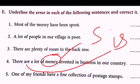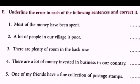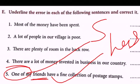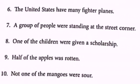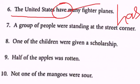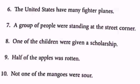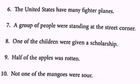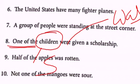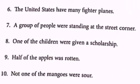'One of my friends have a fine collection of postage stamps.' Here 'friends' is plural, but when preceded by 'one of,' it becomes singular, so the answer is 'has.' 'The United States have many fighter planes' — 'the United States' is a singular noun, so the verb should be 'has.' 'A group of people were standing at the street corner' — 'people' is plural but preceded by 'a group of,' making it singular, so the answer is 'was.' 'One of the children were given a scholarship' — again, 'one of the' makes it singular, so the verb is 'was.'